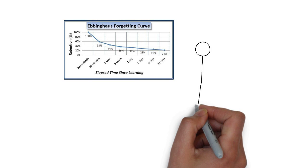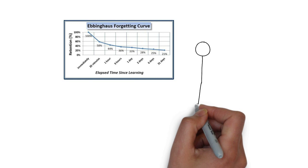So to avoid the Ebbinghaus effect, you need to ask questions when you don't understand, actively take notes, and study those notes tonight — and you'll turn that 25% into 100%.